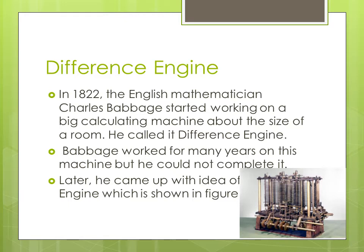This invention improved computing. Different scientists tried to get further. In 1822, English mathematician Charles Babbage started working on a large calculating machine about the size of a home — he called it the Difference Engine. Charles Babbage started working in 1822 on the Difference Engine.